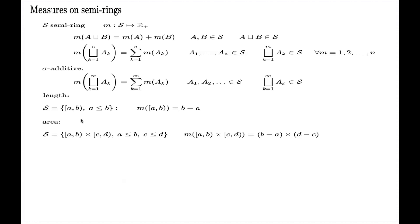The main advantage of introducing measures on semi-rings is that, on one hand, semi-rings have very simple structure, so introducing such measures and checking their additivity and sometimes sigma-additivity is a relatively easy task. On the other hand, defining measures on a semi-ring is enough to extend those measures from the semi-ring to larger, richer structures — rings, algebras, sigma-rings, or sigma-algebras — in a rather standard way. Our task in the following videos will be to see this standard procedure.